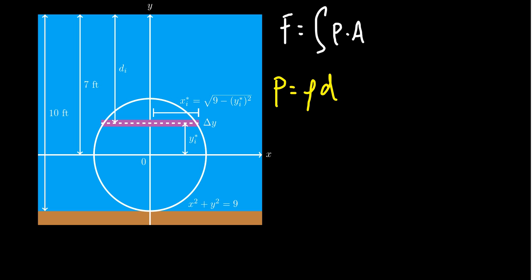The density is going to be pounds per cubic foot. For water that's going to be 62.5 pounds per cubic foot. And then the depth, well this is going to depend on how we choose our variable x.